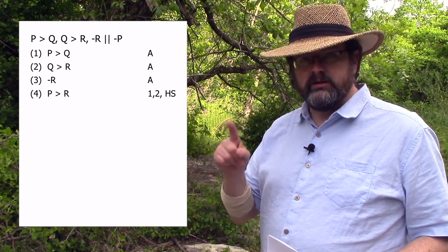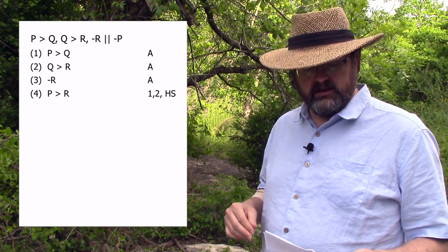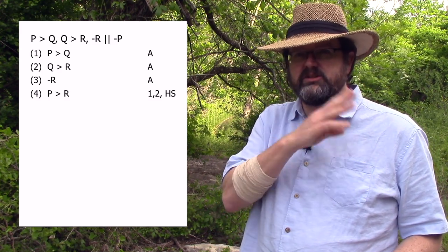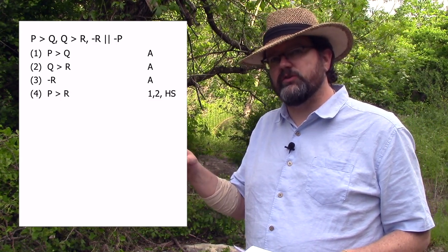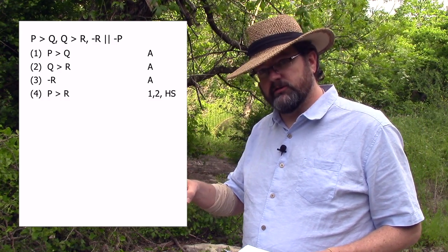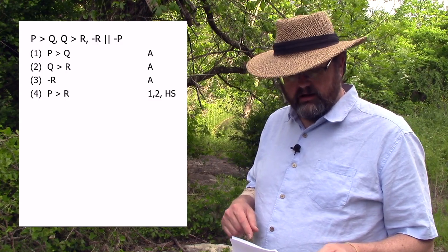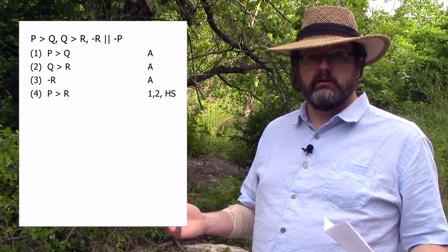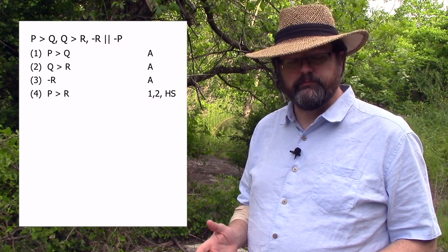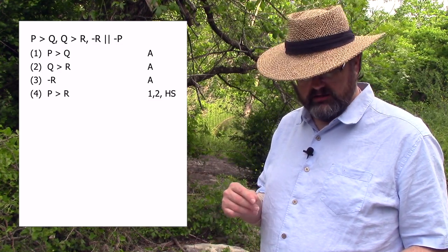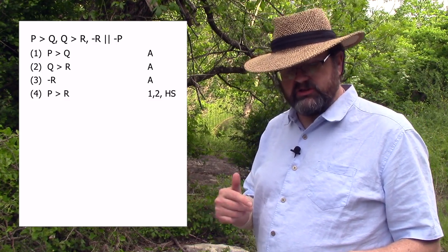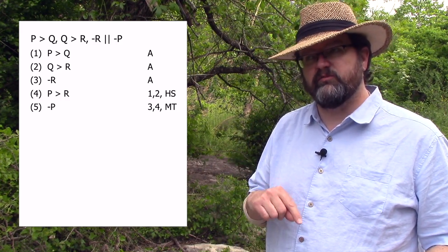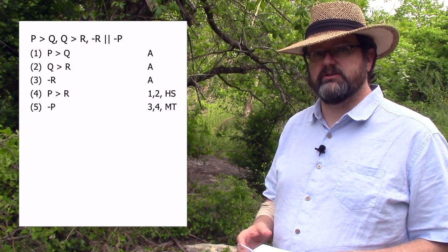Look at lines one and two. 'If P then Q' says P is sufficient for Q. 'If Q then R' says Q is sufficient for R. If P is sufficient for Q and Q is sufficient for R, then P is sufficient for R. Using lines one and two, we can infer 'if P then R' using hypothetical syllogism. Then we have not-R as our assumption in line three, and using not-R and the conditional 'if P then R,' we can infer not-P using modus tollens with lines three and four.